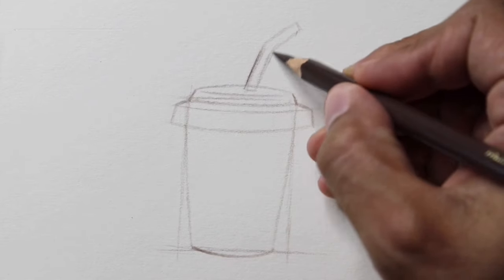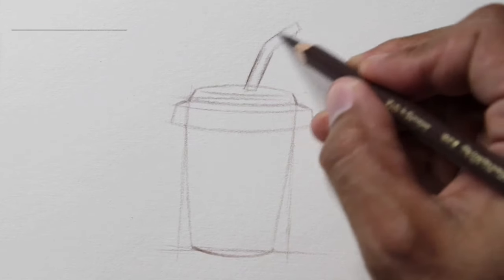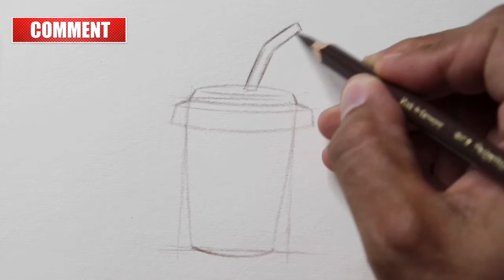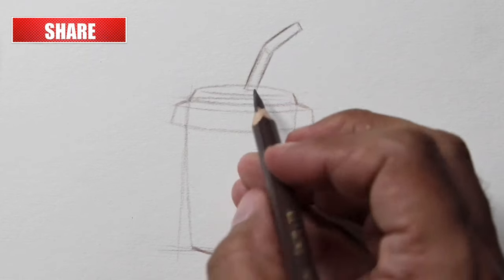Using a darker pencil, outline the shape of the cup and the straw to give them definition.